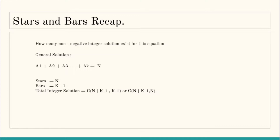To recap the stars and bars algorithm: it is used to solve equations where you have k variables — a1 + a2 + a3 + ... + ak — and their sum equals n, where the variables can take non-negative integer values (from 0 to anything). The total number of integral solutions of this kind of equation is C(n+k−1, k−1), which is a binomial coefficient — equivalently C(n+k−1, n) — where n is the total number of stars and k−1 is the total number of bars.